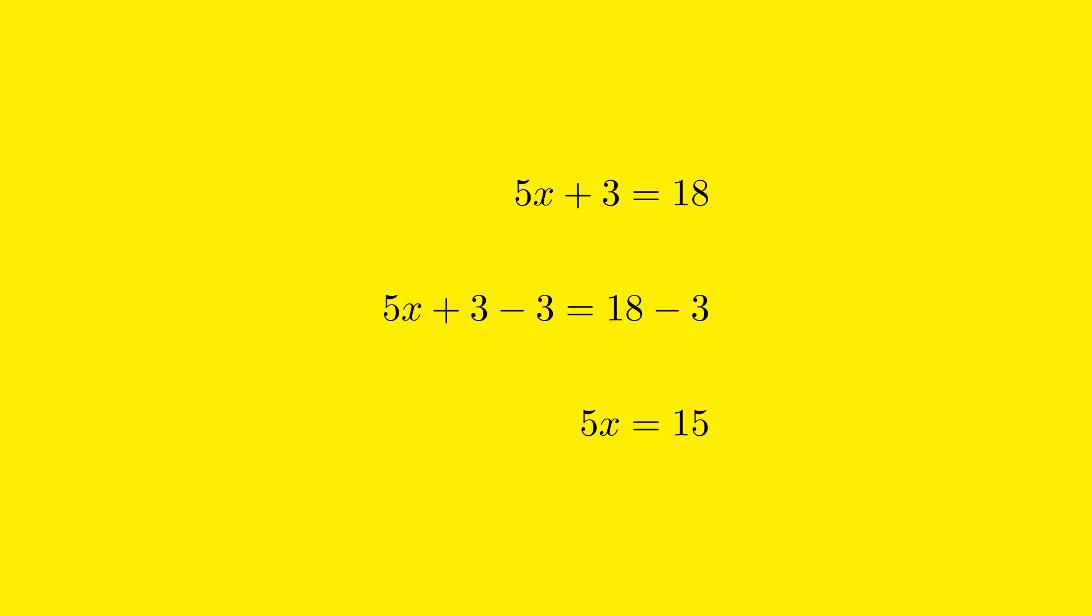We subtract 3 from both sides of the equation, and the new expression becomes 5x on the left side and 18 minus 3 on the right side. When we calculate 18 minus 3, we get 15. So now our equation reads 5x equals 15.